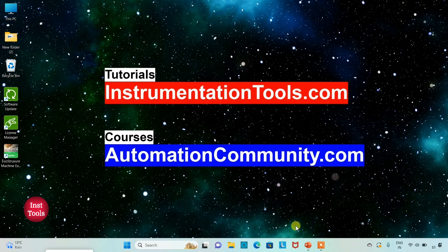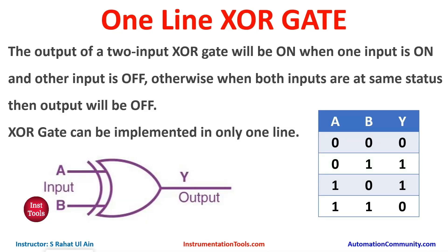Hello friends, welcome to Automation Community. Today in this video we are going to discuss about one-line XOR gate. First, we will discuss what is an XOR gate. In a two-input XOR gate, the output will be on when one input is on and the other input is off.